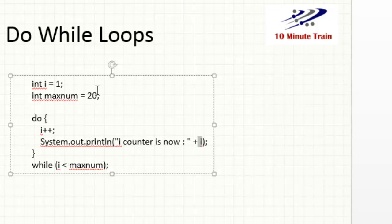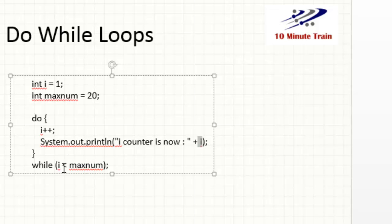Of course we could change any of these values. It goes through the cycle, prints out the number, then cycles through again, adds one to i, and as long as it hasn't met the max number in the while statement, it will continue to execute.